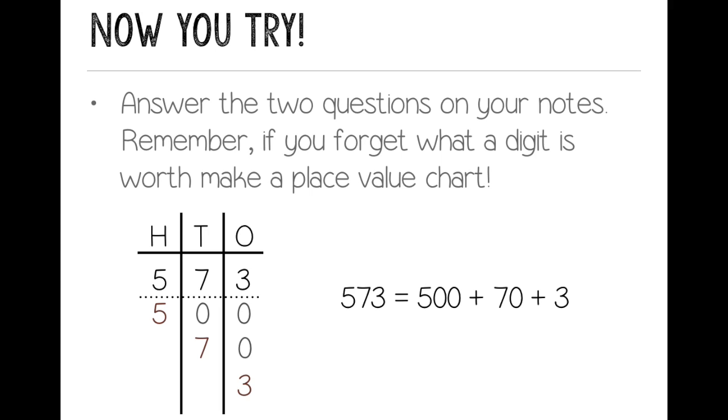Now you try. Answer the two questions on your notes. Remember, if you forget what a digit is worth, make a place value chart. So here we have an example, 573. There's a 5 in the hundreds place, so it's worth 500. The 7 in the tens place is worth 70. And the 3 in the ones place is worth 3. So 573 is equal to 500 plus 70 plus 3. See everyone tomorrow!